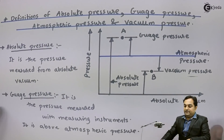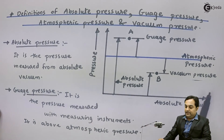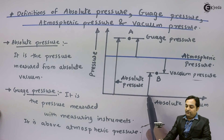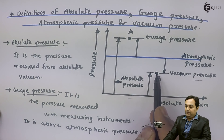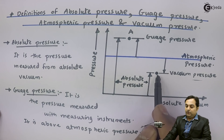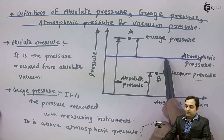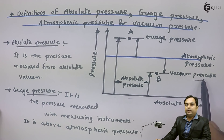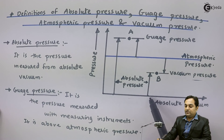To summarize using the diagram: absolute pressure is measured from absolute vacuum, which is the zero value of pressure. For point B, which is below the atmospheric line, if we measure with respect to absolute vacuum that is called absolute pressure of point B. If we take the reference as atmospheric pressure and measure point B, that is called vacuum pressure — not absolute vacuum — because it is not measured with respect to the zero line.